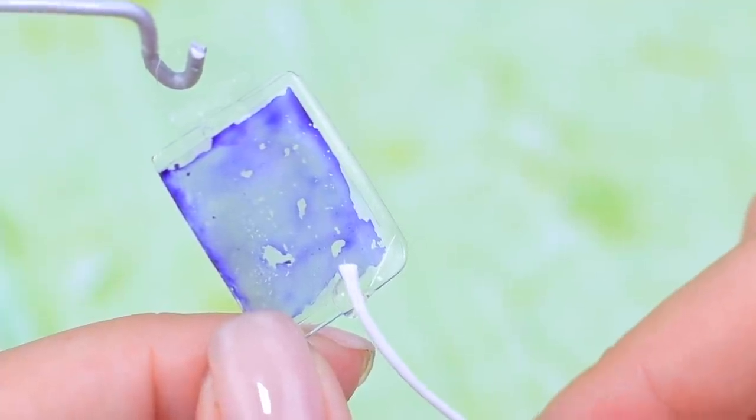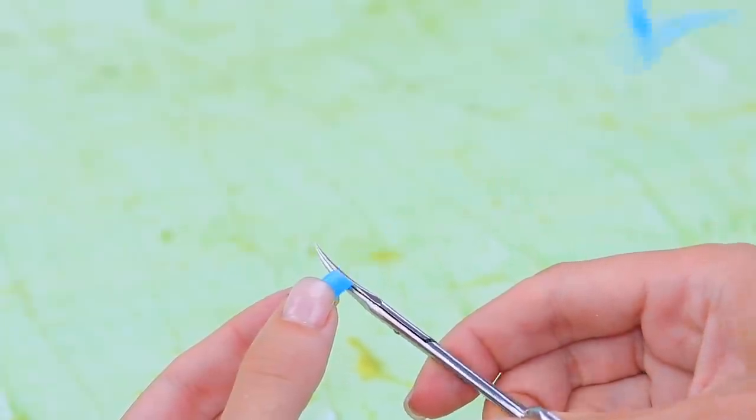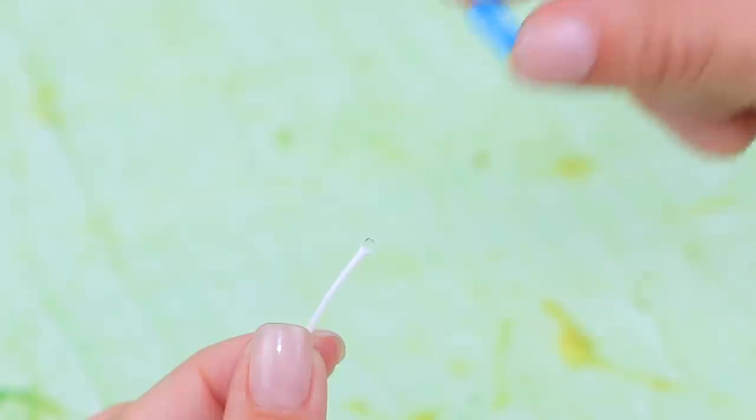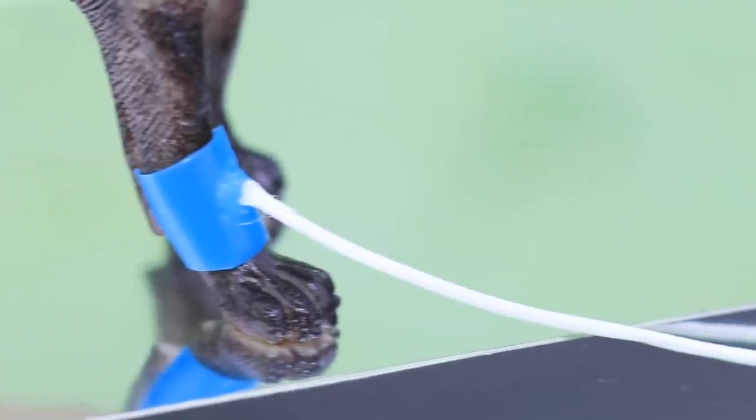Make a tube out of small cords. Glue a piece of straw to the edge. Cut it and attach a catheter. It's so easy to put it on the paw!